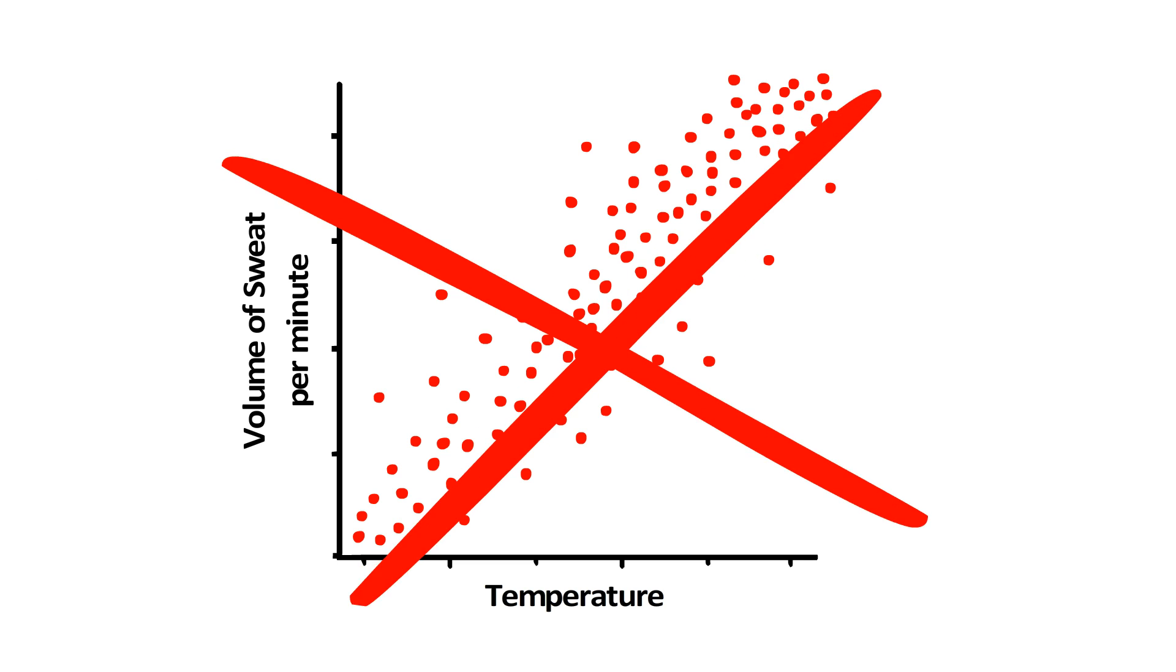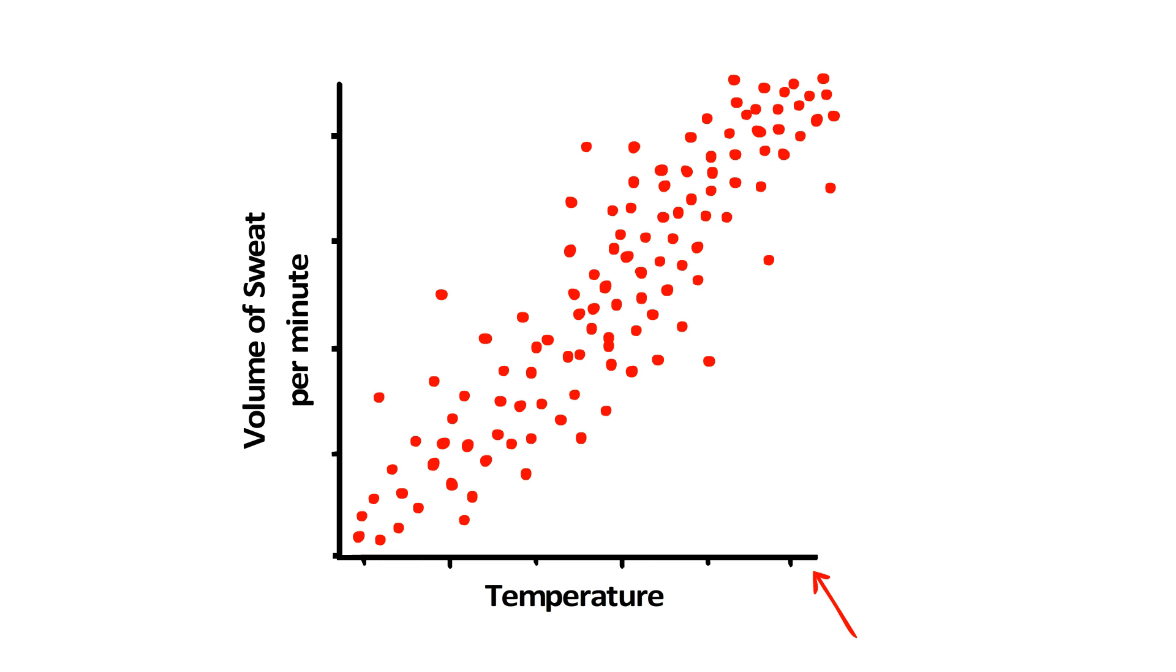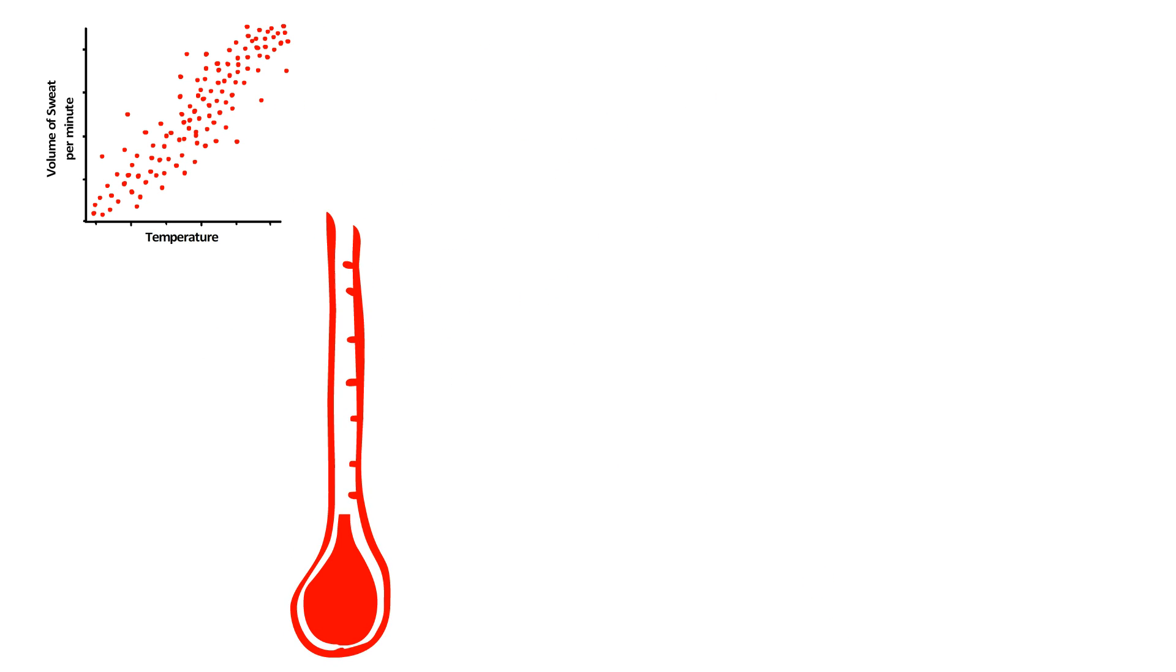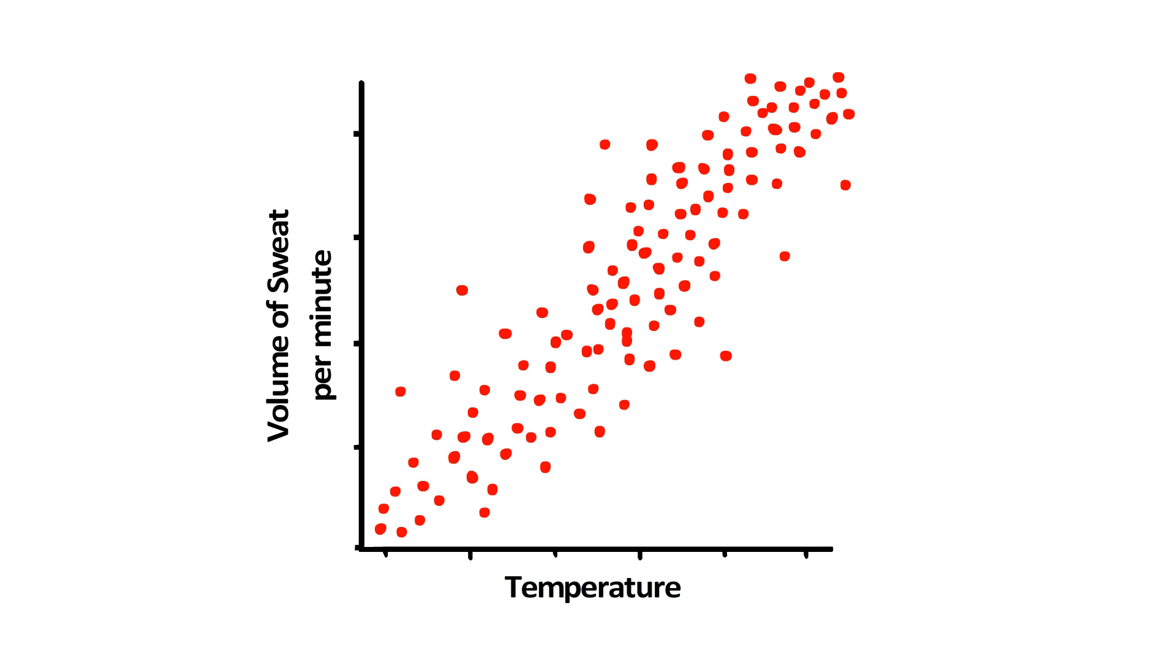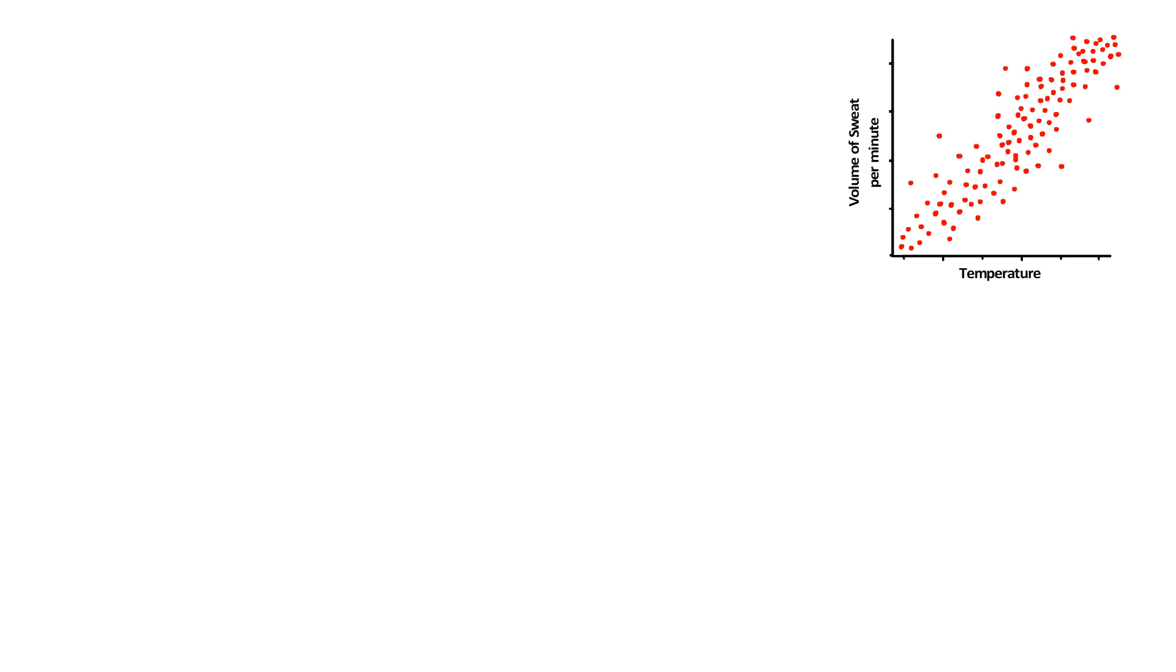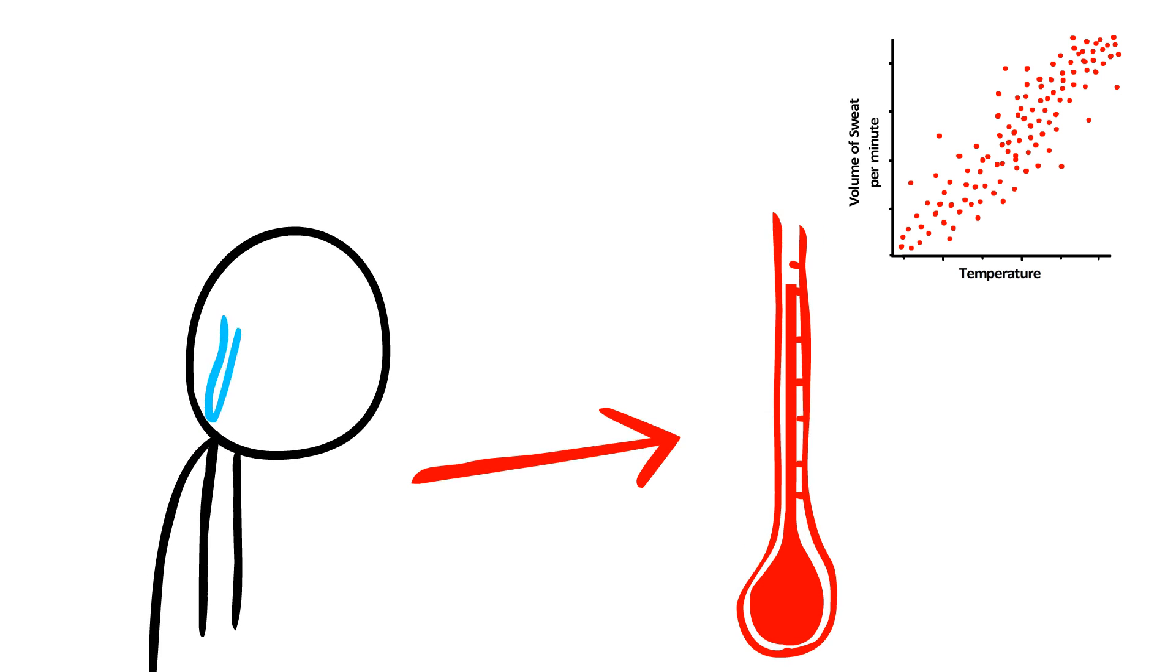What this doesn't mean is that an increase in one is causing the other. Even though we might like to think that the increasing temperature is causing people to sweat more, there isn't actually evidence of that in this graph. Because from the data we have, it's equally likely that people sweating more is somehow causing the temperature to rise in the room.